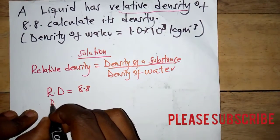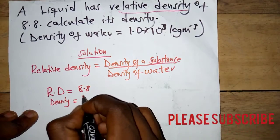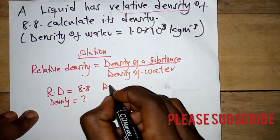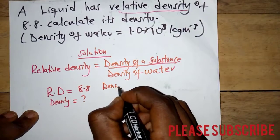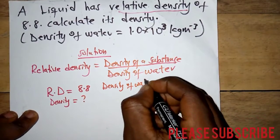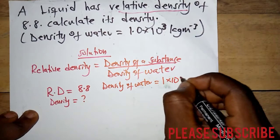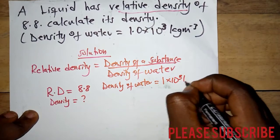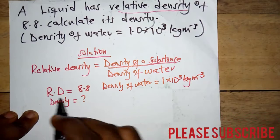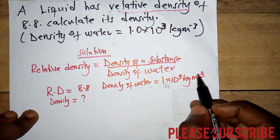We have to calculate the density of the substance, which we don't know. We do know the density of water, which is 1 times 10 to the power 3 kilograms per meter cube. Density has units, unlike relative density.